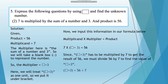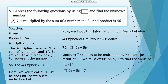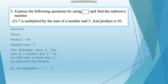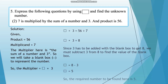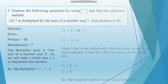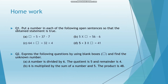Blank box plus 3 equals 56 divided by 7, which equals 8. Since 3 has to be added with the blank box to get 8, we subtract 3 from 8. So blank box equals 8 minus 3, which gives blank box equals 5. The required number is 5.